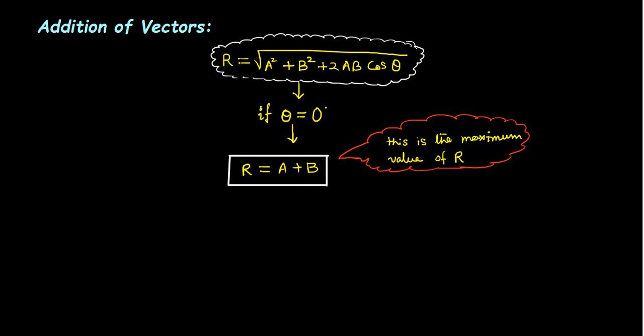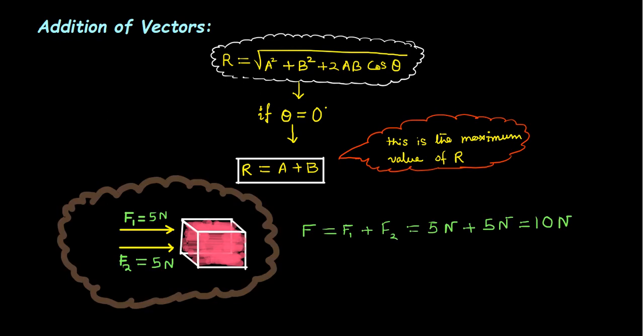Case one: suppose two vectors A and B are acting along the same direction, meaning the angle between them is zero. The relation turns into R equal to A plus B — simple scalar addition — and this is the maximum possible value of R. For example, if this block is pushed by two forces acting along the same direction, the resultant force is simply F1 plus F2, which is ten Newton.